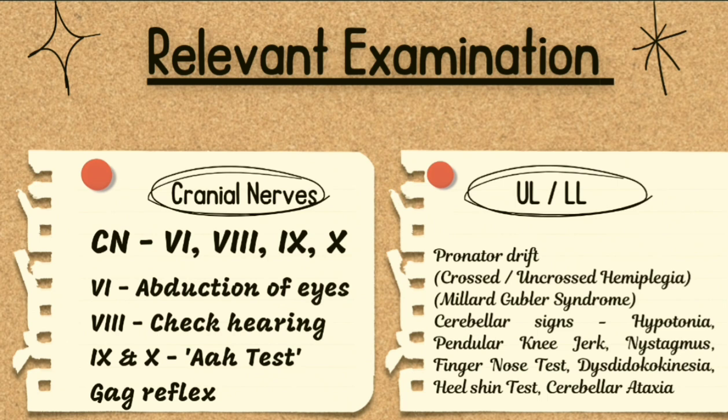Another important part of relevant examination is cerebellar signs: check for hypotonia, pendular knee jerk, nystagmus, finger-nose test, dysdiadochokinesia, heel-chin test, and cerebellar ataxia. If the patient has lower motor neuron type of facial palsy, ear examination is essential — look inside the ear and in front of and behind the ear for any vesicles. Also assess the parotid gland for any parotid mass or history of parotid surgery.